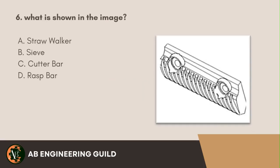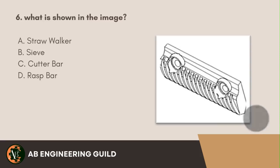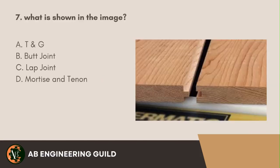Question 6: What is shown in the image? A. Straw walker. B. Sieve. C. Cutter bar. D. Rasp bar. Answer: D. Rasp bar.